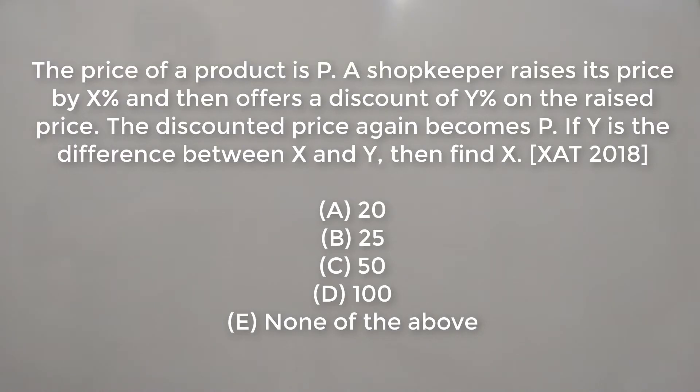The price of a product is P. A shopkeeper raises its price by X% and then offers a discount of Y% on the raised price. The discounted price again becomes P. If Y is the difference between X and Y, then find X.